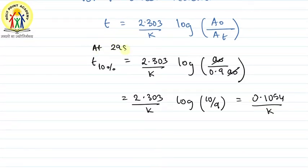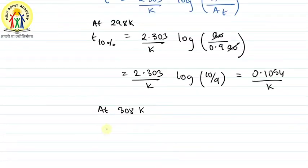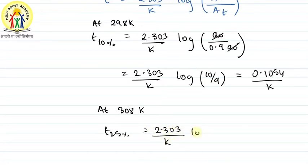Similarly, at 308 Kelvin, for 25% completion: t = 2.303/k' × log(a₀/a). Since 25% is completed, 75% remains, so a = 0.75 a₀. This gives t = 2.303/k' × log(100/75).